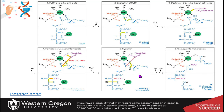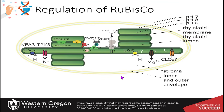When light is present, the light reactions in the thylakoid pump protons from the stroma into the thylakoid, generating the energy to make ATP — very similar to the electron transport chain. Doing this will also increase the pH inside the stroma, because if you're pumping protons out of the stroma and into the thylakoid space, you're removing acidity from the stroma. The pH goes up to about pH 8, while the pH in the thylakoid drops to about pH 6.